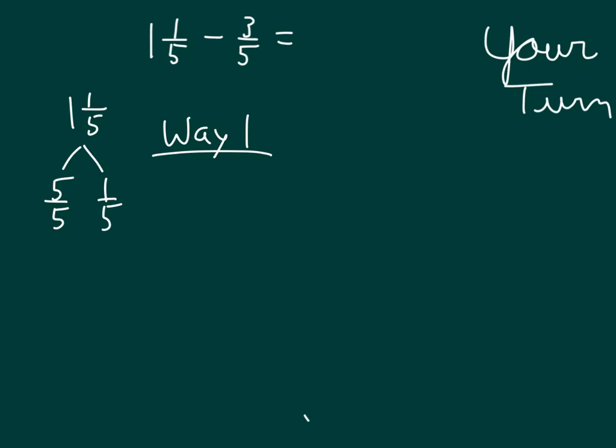We took 1 and 1 fifth, we broke it apart into its wholes and its fractional parts, and then we combined those wholes and those fractional parts. So renaming that 1 and 1 fifth as 6 fifths, and when we subtracted 3 fifths from that, we have fifths and 6 minus 3 is 3. So we have 3 fifths there.